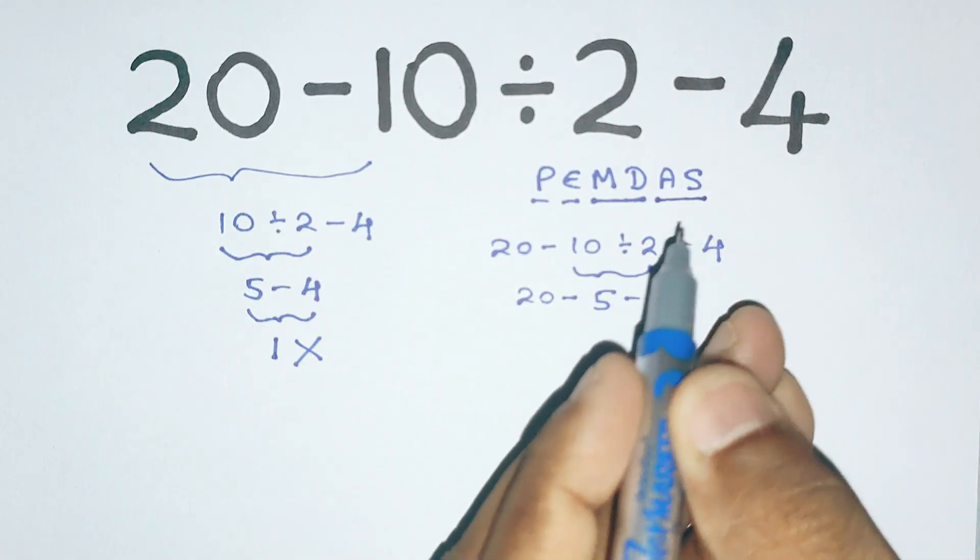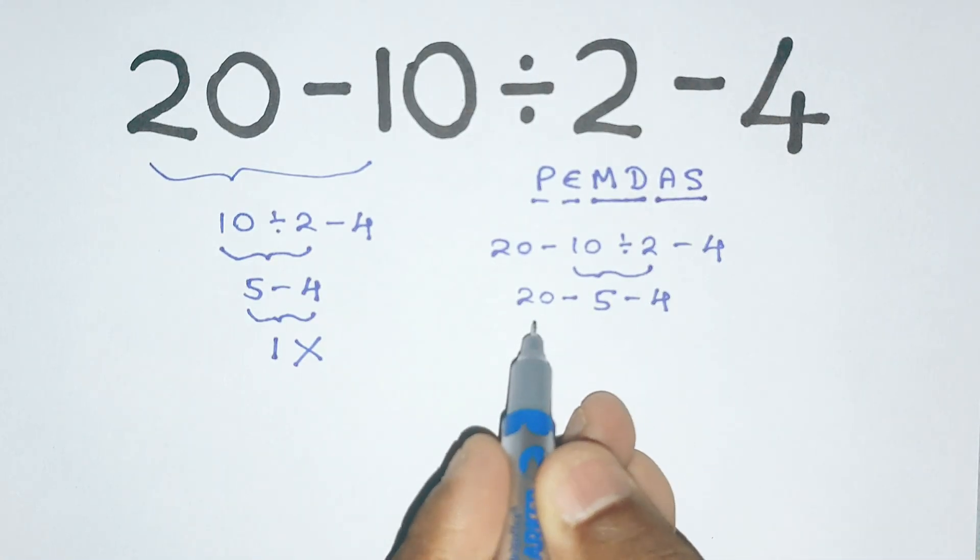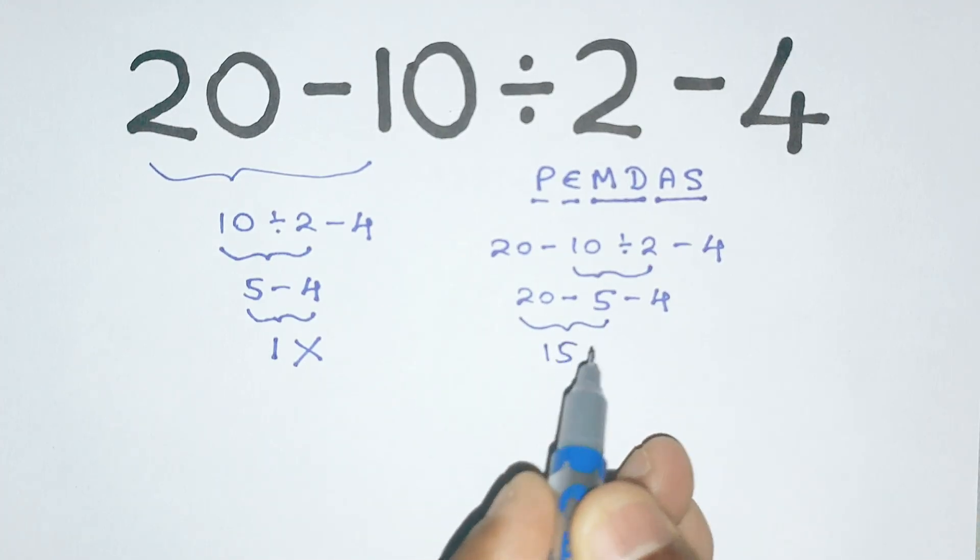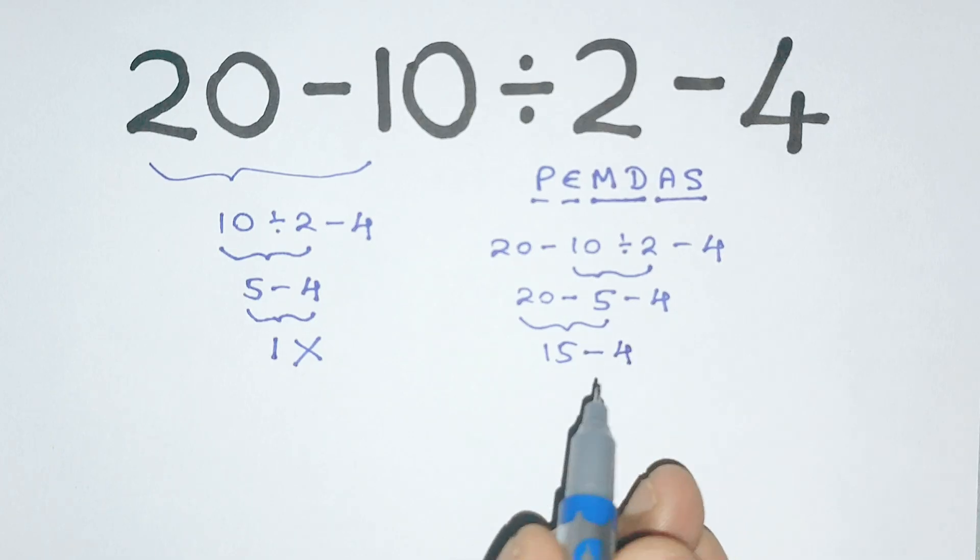Next we move on to addition and subtraction going from left to right. First, 20 minus 5 which gives us 15. After that we just bring down this minus 4 as it is. Now we can do the next step, 15 minus 4 leaves us with 11. So the correct answer to this problem is 11.